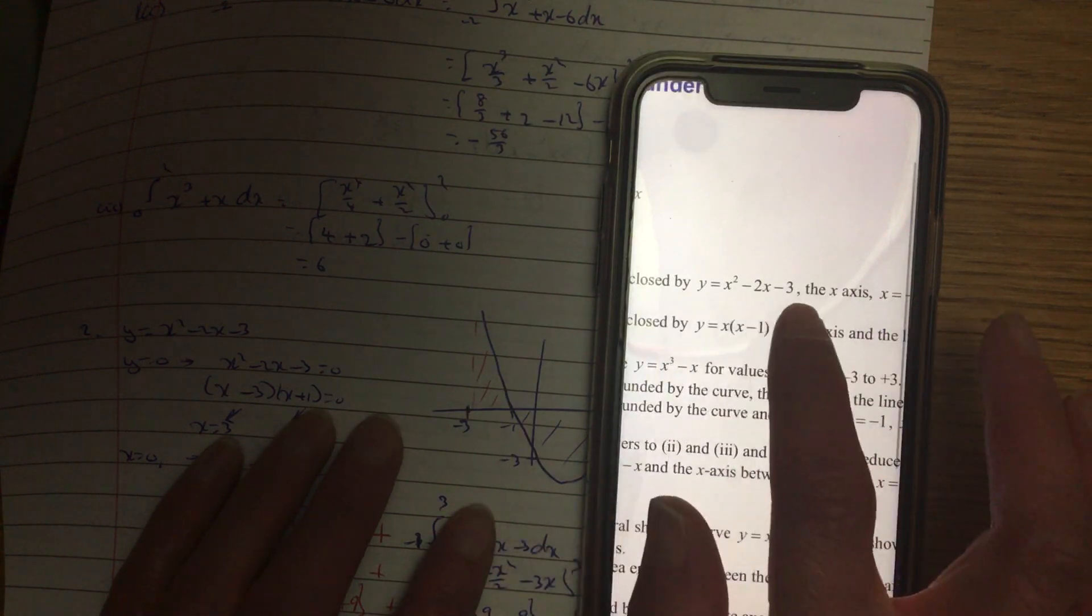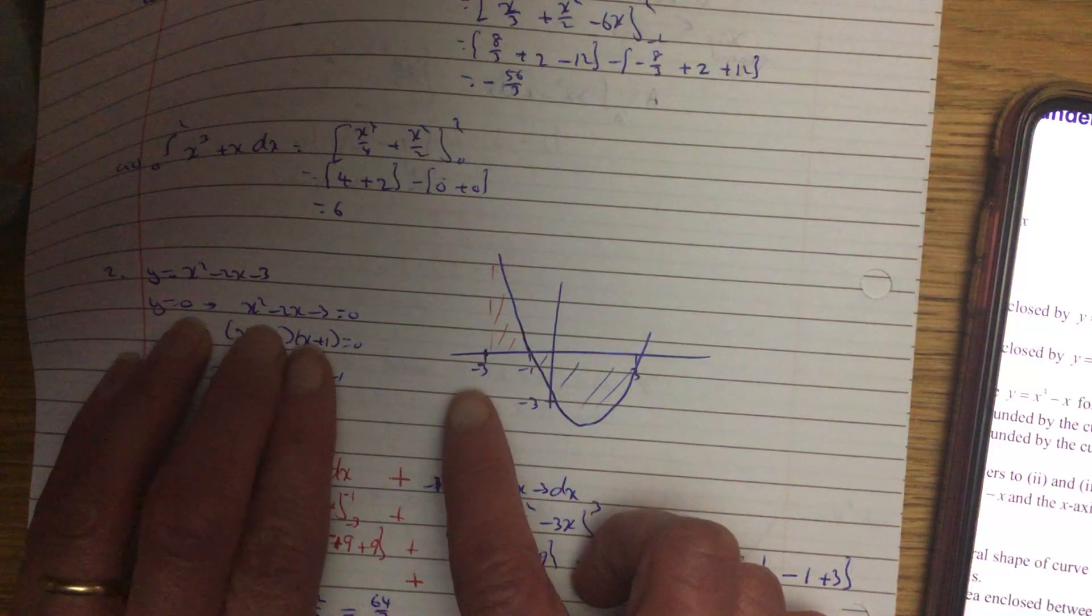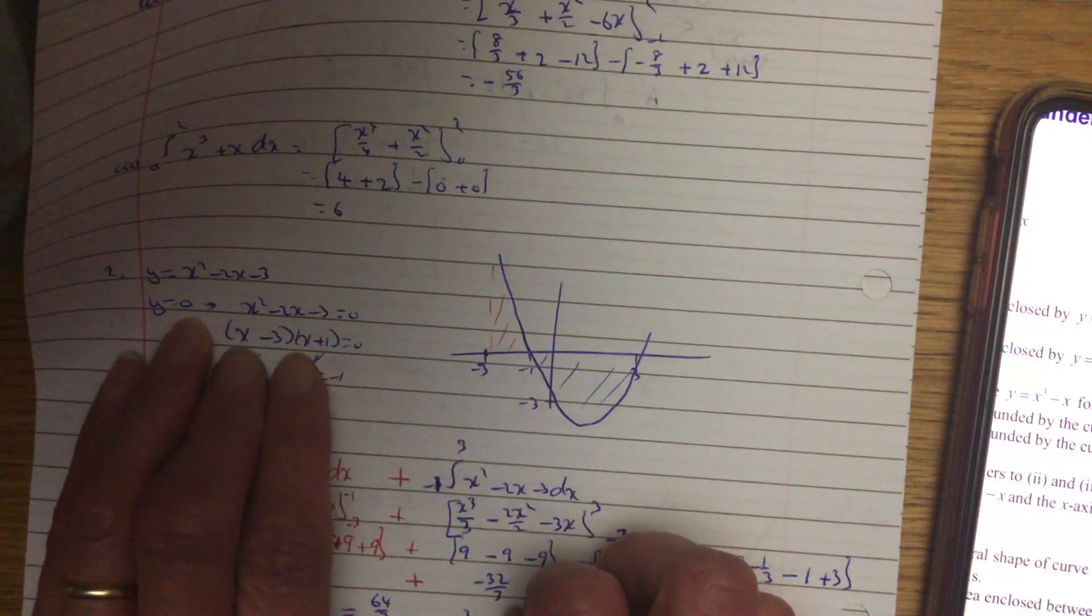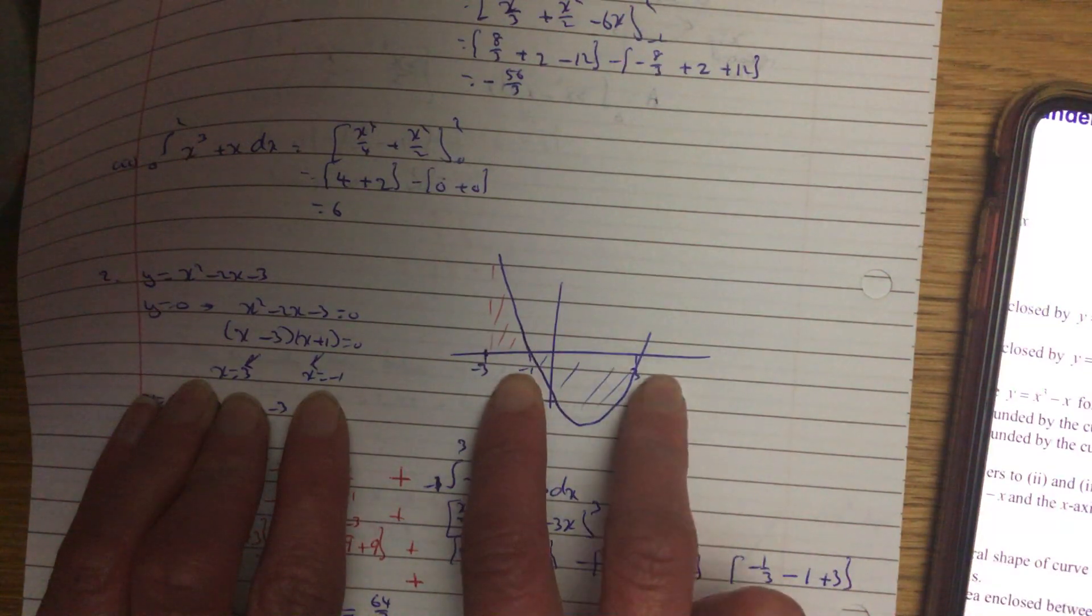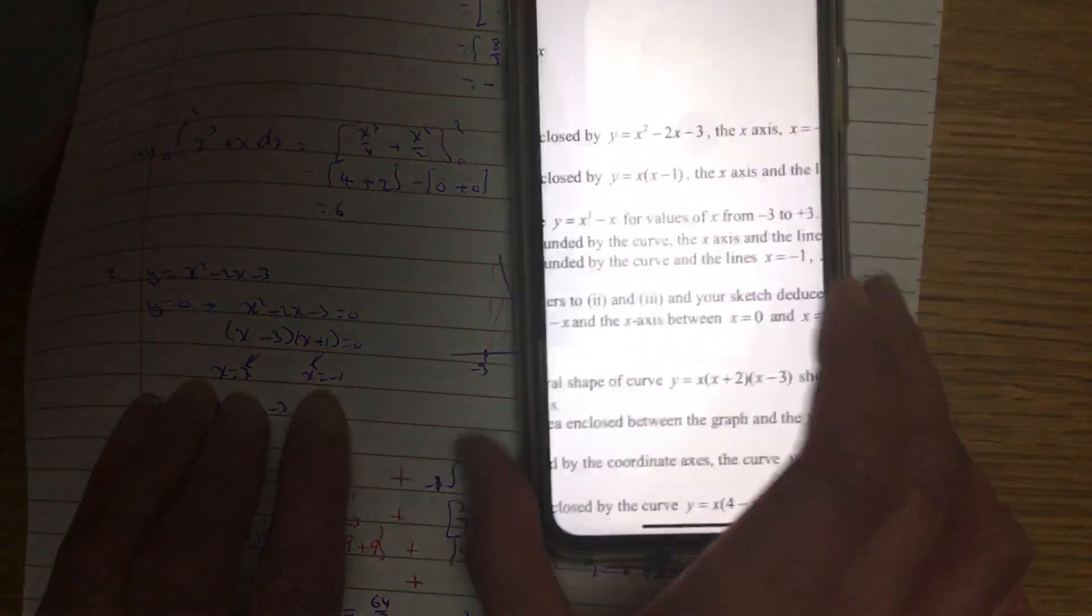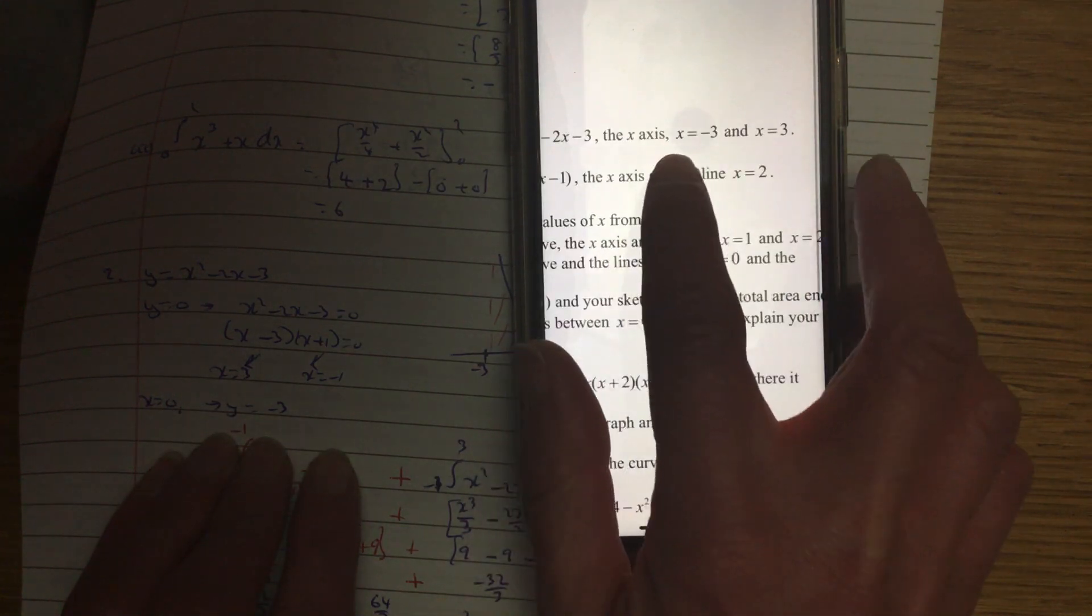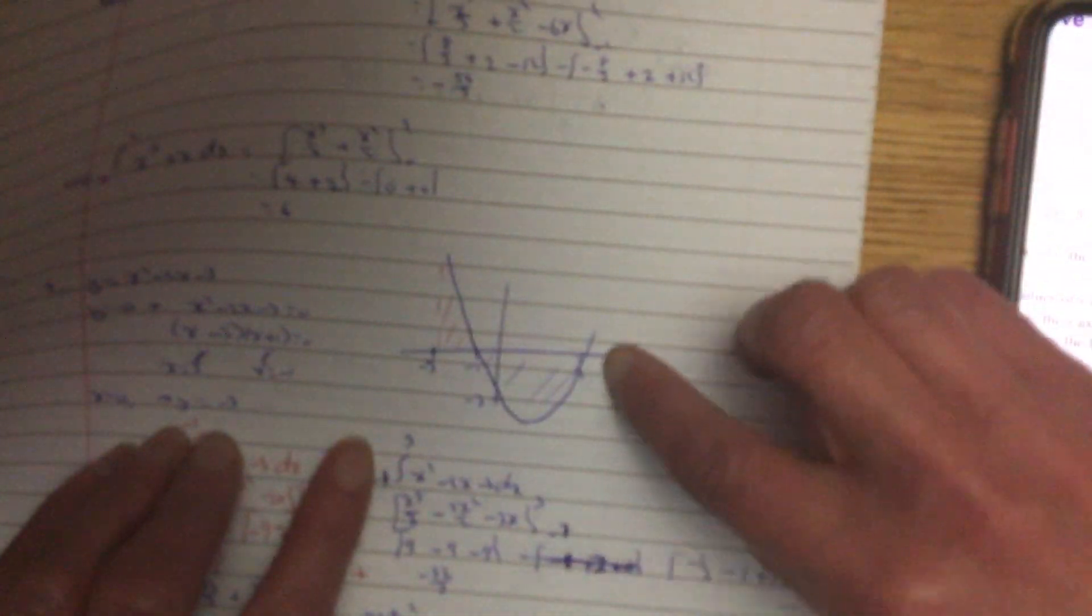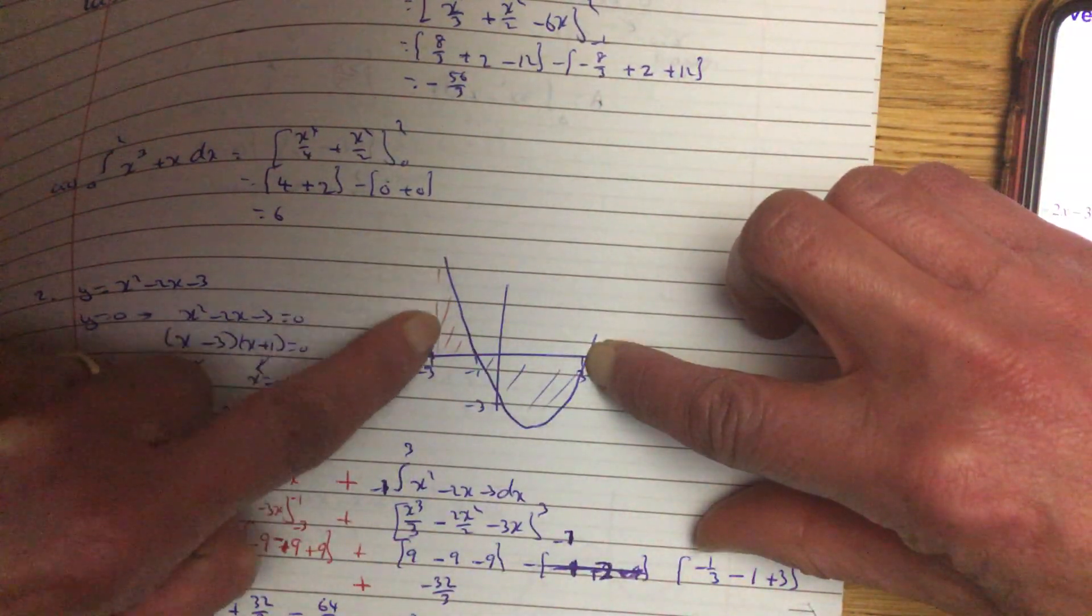Find the area enclosed by this graph, so just my standard process for sketching your graph. Put y equals 0 in here, see where it crosses the x-axis. So it crosses the x-axis at minus 1 and at 3, so put that on. This question's got an extra wee bit to it. It says the lines, or sorry, x equals minus 3 and x equals 3. x equals 3 is there, which is fine. x equals minus 3 is there.